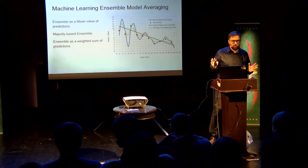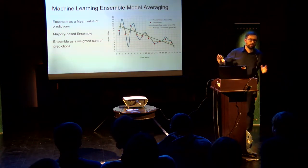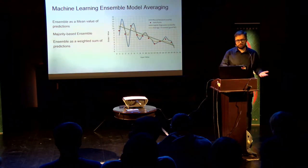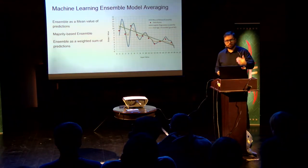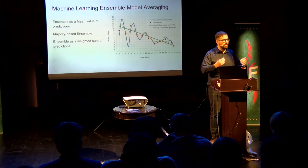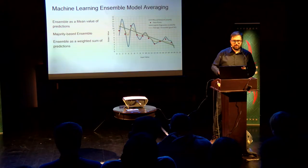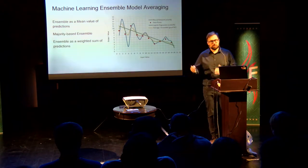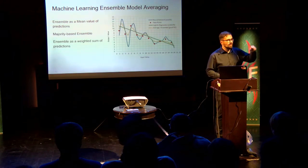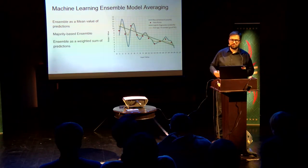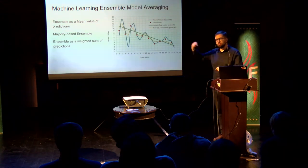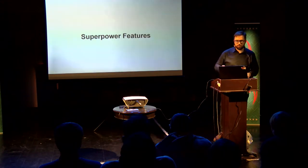Ensemble methods are a very common approach — all Kaggle competitors try to use them. Currently we are trying to decrease variance (bagging), bias (boosting), or improve predictions (stacking). Currently Ignite supports only boosting. Bagging is in progress, and stacking is on the roadmap. I will talk about the roadmap later.